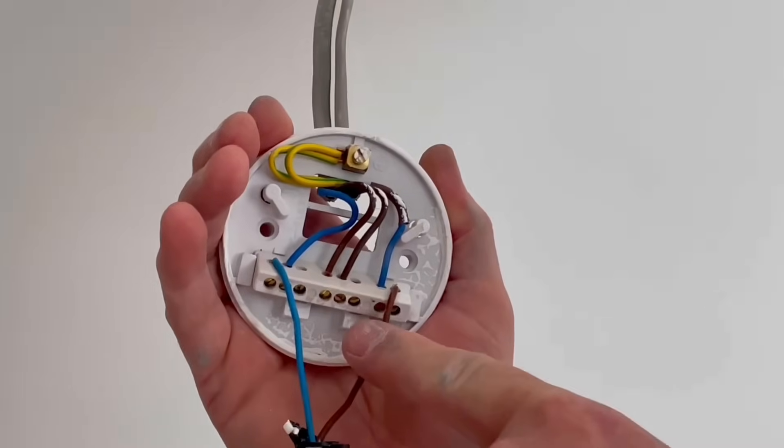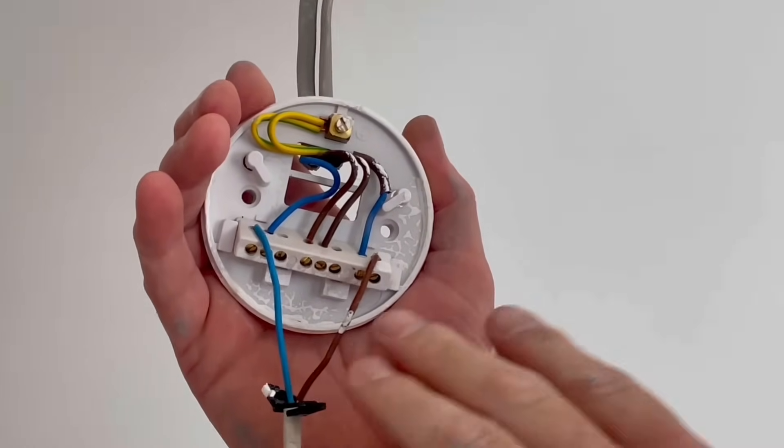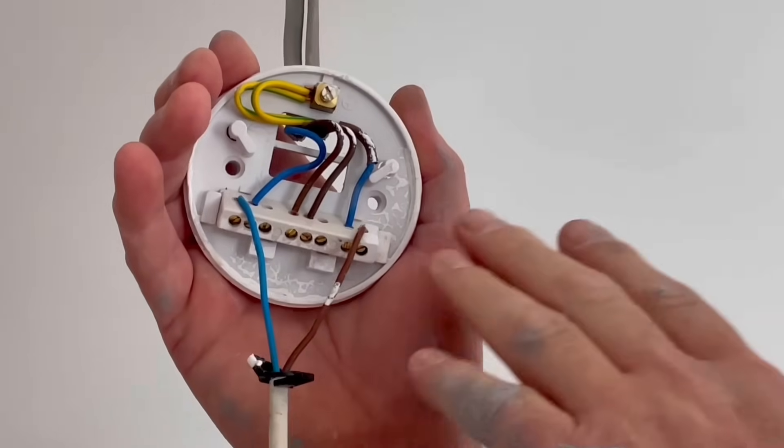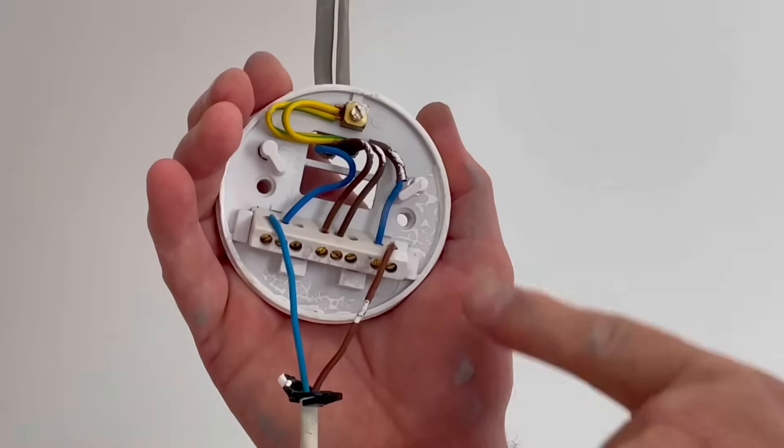So let's have a look inside our ceiling rose. The first thing you might notice is we've got maybe one cable less than you expect. This is because this light here is the last one on the lighting circuit. So let's see what we've got.